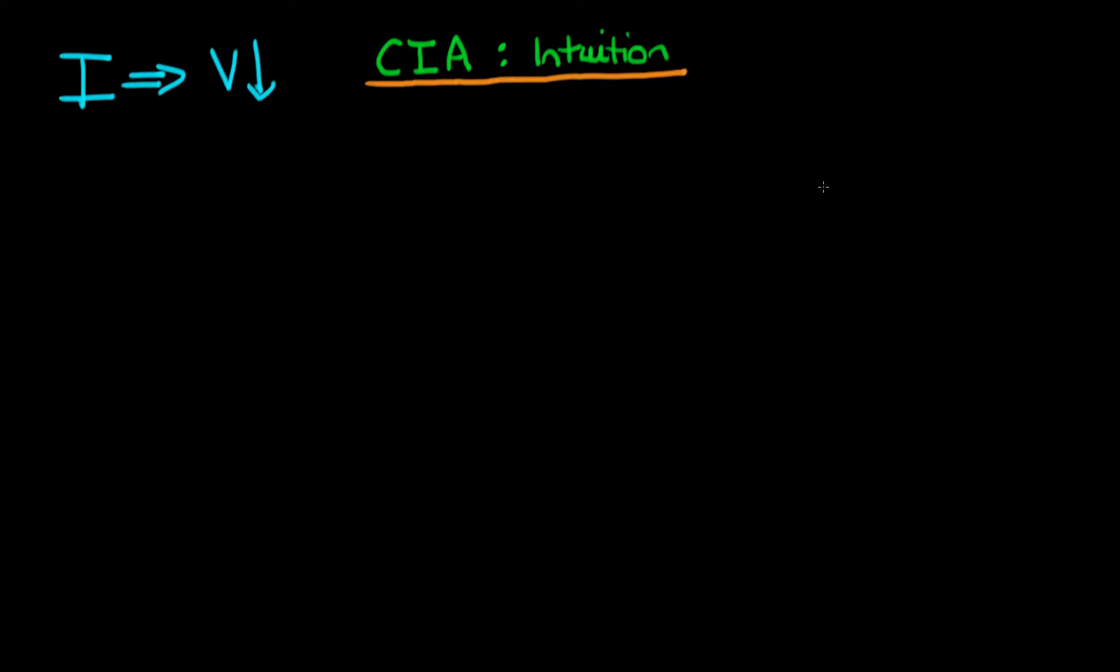In this video, I want to explain the intuition behind the conditional independence assumption, which we introduced in the last video, and explain why it allows us to at least conditionally evaluate the average causal effect.